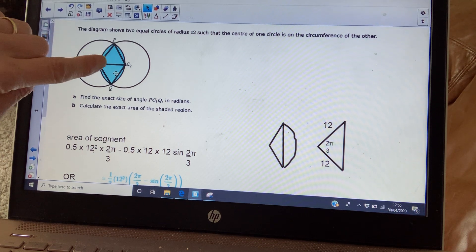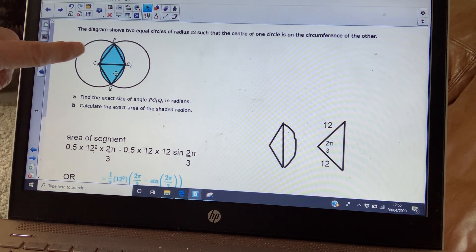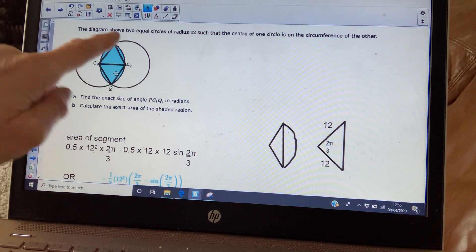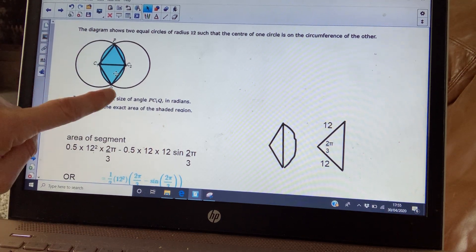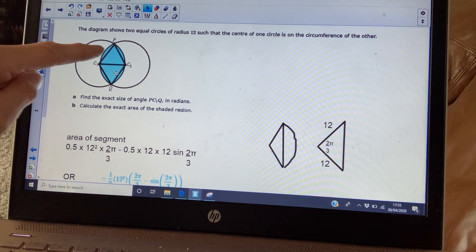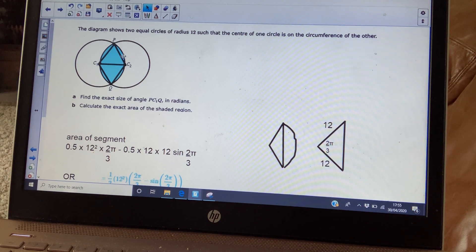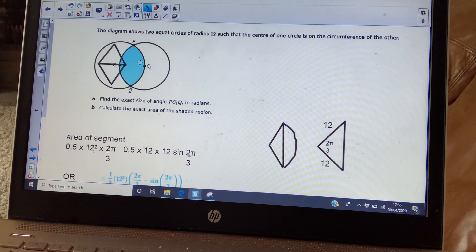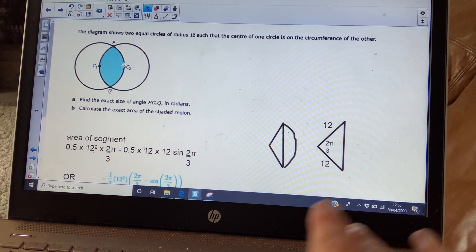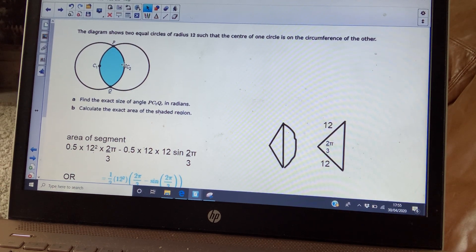So if this angle here is 60 degrees, that's pi by three radians. This angle here is pi by three radians. So this angle here, when I ask you to find the angle P to C1 to Q is a third pi plus a third pi. So the angle is two thirds pi radians.